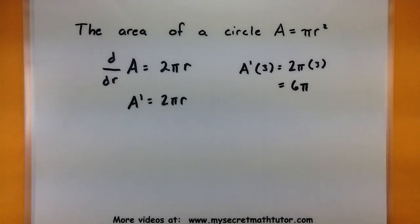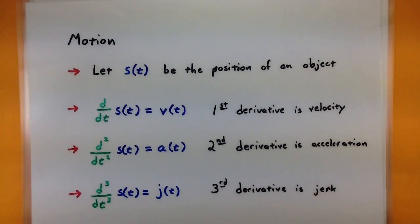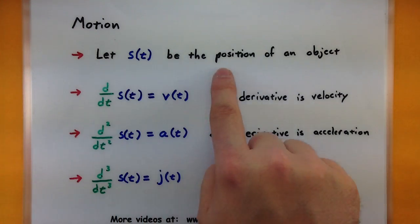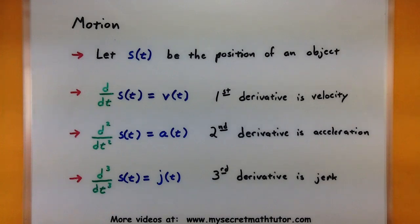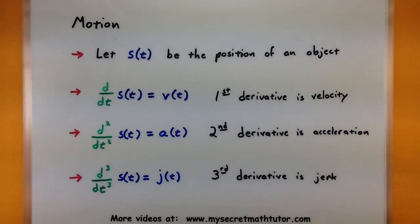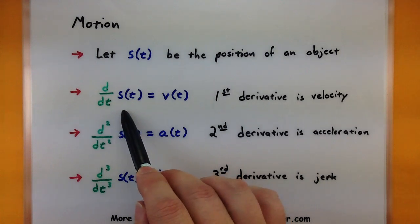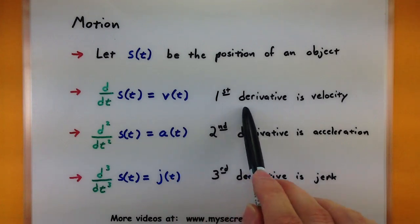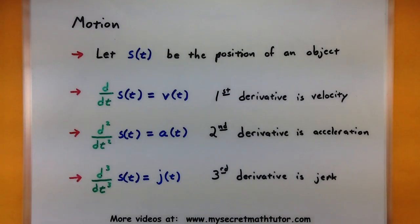Now one really important area where you want to know derivatives and how things are changing is when it involves motion. Let's look at some of the key terms and derivatives for that one. When you're dealing with motion, usually you have some sort of function that gives you the position of the object. And this might give you the height of the object after some amount of time, or it might actually just give you where that object is located after a certain amount of time. Now when you look at the derivative of the position, now you want to know how's the position changing over time and this is actually giving you the velocity of that object. So how fast is it going?